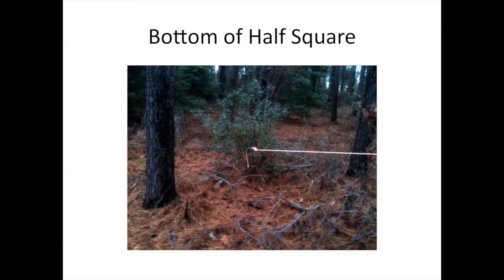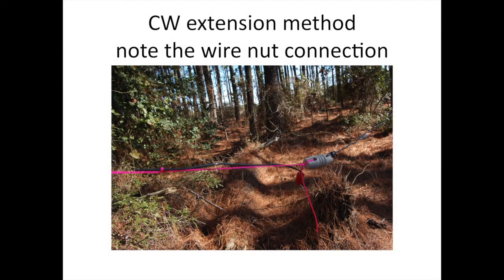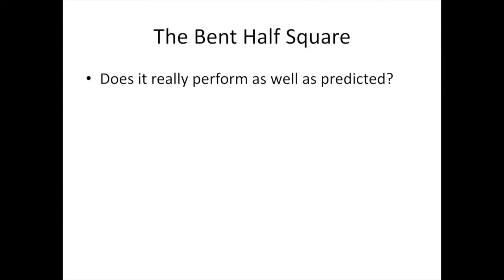Here are some pictures of the bottom of my half square. It comes down and I've got it tied off and then bent in. This shows the antenna coming down to an insulator and then bent to the left. I've got it maybe 10 feet or so parallel to the ground. The bent half square.